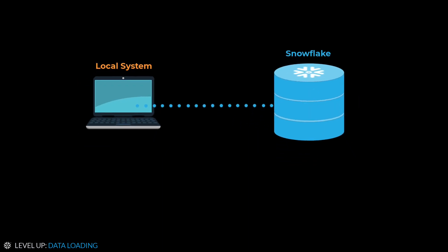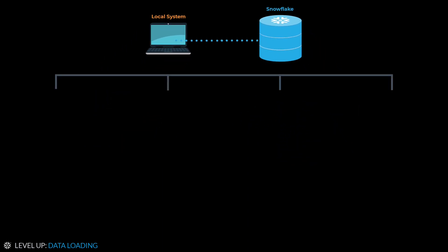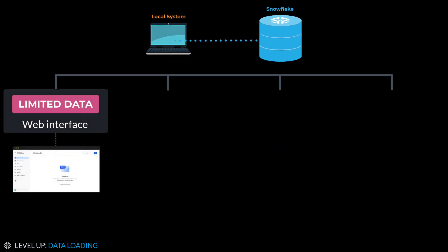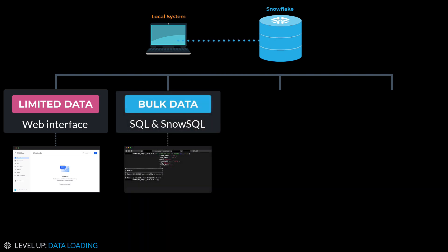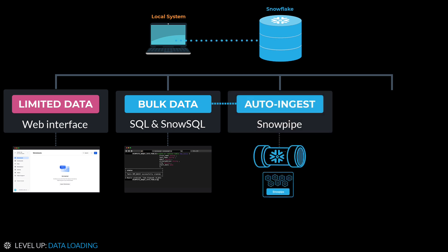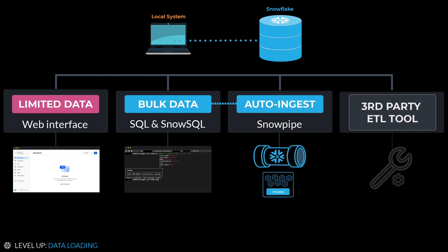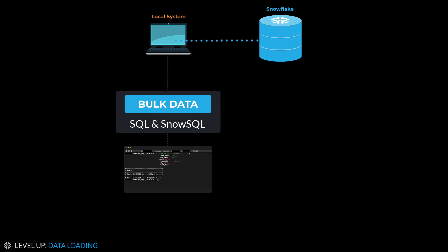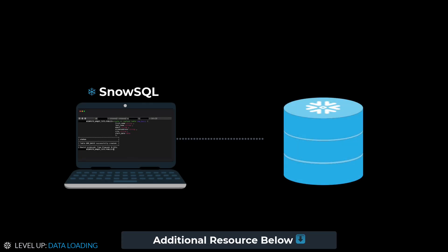Snowflake supports four different options for loading data. For loading limited amounts, you can use the web interface. For bulk loading, you can use SQL commands in SnowSQL and auto-ingest using Snowpipe, or use third-party tools to bulk load data from external sources. This video will focus on loading CSV files using Snowflake's SnowSQL, Snowflake's client tool that allows you to connect to Snowflake from your local machine.